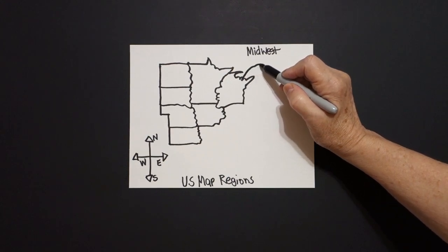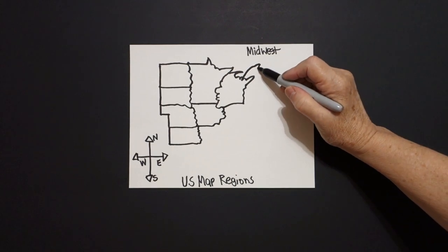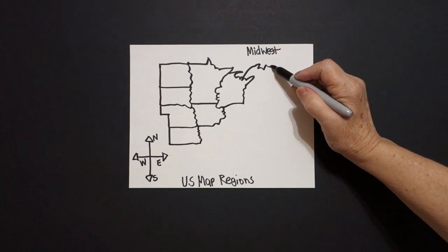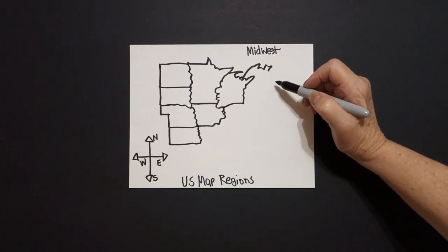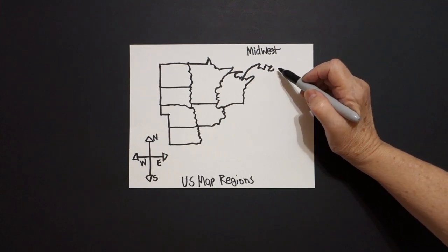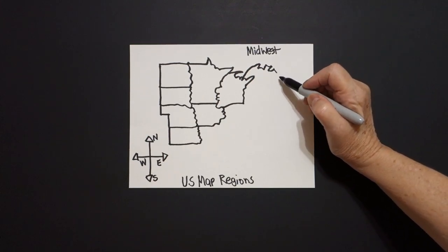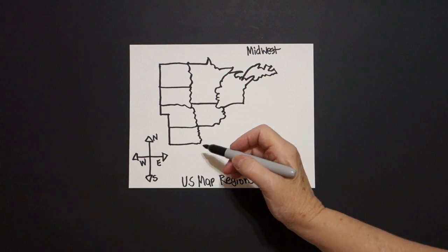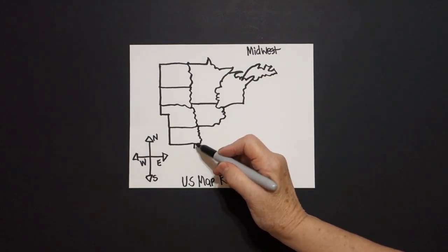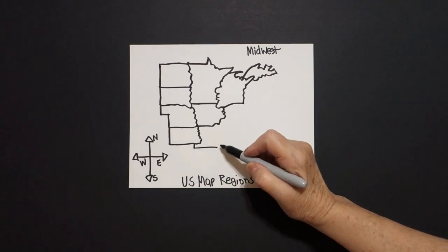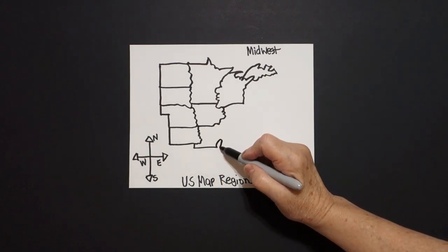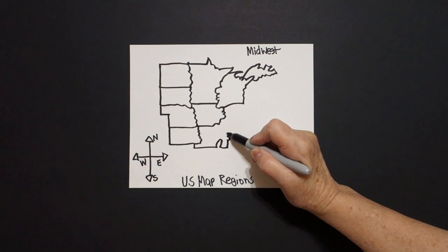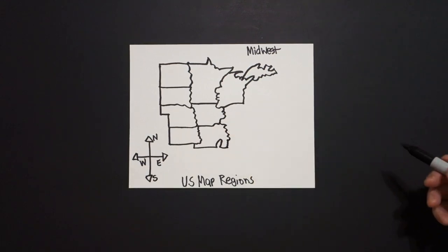We're going to draw a curve line out, little curve line in, little curve line out, little straight line up, curve line, little curve line in, little curve line out, straight diagonal out, in, connect. Once we've got that, we come all the way down here and we're just going to draw a little straight line down, straight line over, little curve line in, down, little curve line up, wavy wavy wavy line, connect.